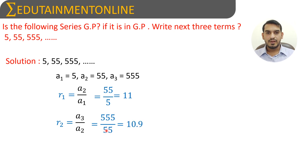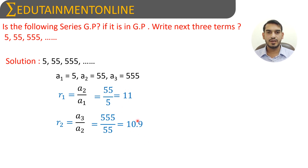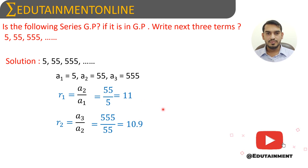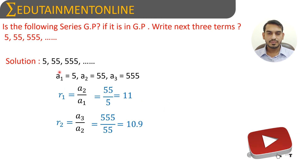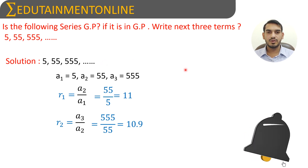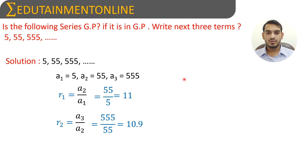555 equals 5 × 111, and 55 equals 5 × 11, so 555 divided by 55 equals 111 divided by 11, which equals 10.9. The first ratio is 11 and the second ratio is 10.9. Since these two ratios are not exactly equal, this series is not in geometric progression.